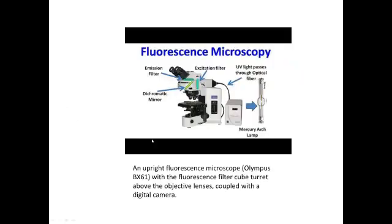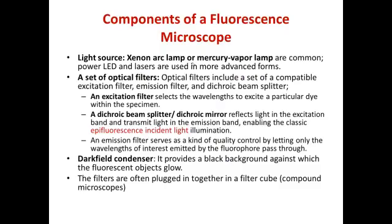Here are the different parts of the fluorescence microscope: the emission filter, the dichromatic mirror, the excitation filter. UV light can pass through the optic fibers and reach the viewer through the eye. There is also an upright camera attached to the computer where you can see a larger picture. The light sources commonly used are the xenon arc lamp or the mercury vapor lamp, and in advanced forms, power LED lights or lasers.